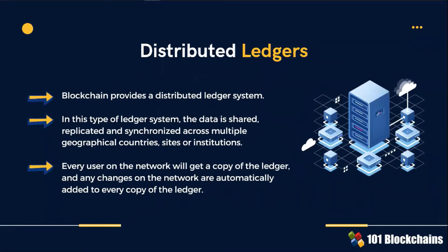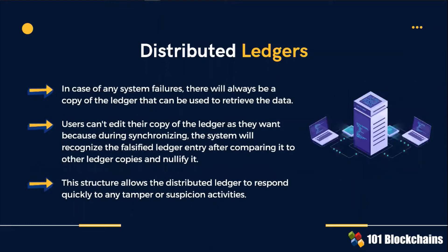Blockchain is built on a distributed ledger system. Distributed is different from decentralized — make sure you understand this point. In a distributed architecture, data is shared, replicated, and synchronized across multiple geographical countries, sites, or institutions. These are called nodes. In case of a system failure at one node, there will always be a copy of the ledger that other nodes will share to retrieve the data. A new transaction will become part of the distributed ledger if all nodes are synchronized to accept that new input.